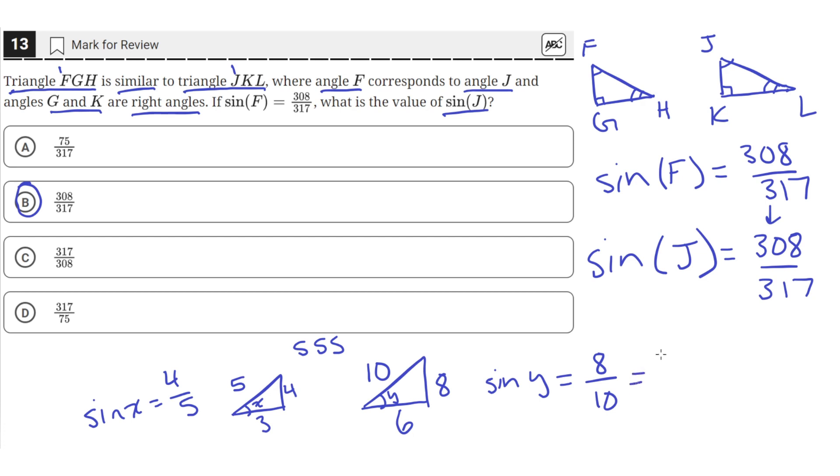Now we can simplify this fraction to just 4 over 5. So for similar triangles, the sine and the cosine and even the tangent of corresponding angles, so X and Y in this case, are equal. So the correct choice is answer B.